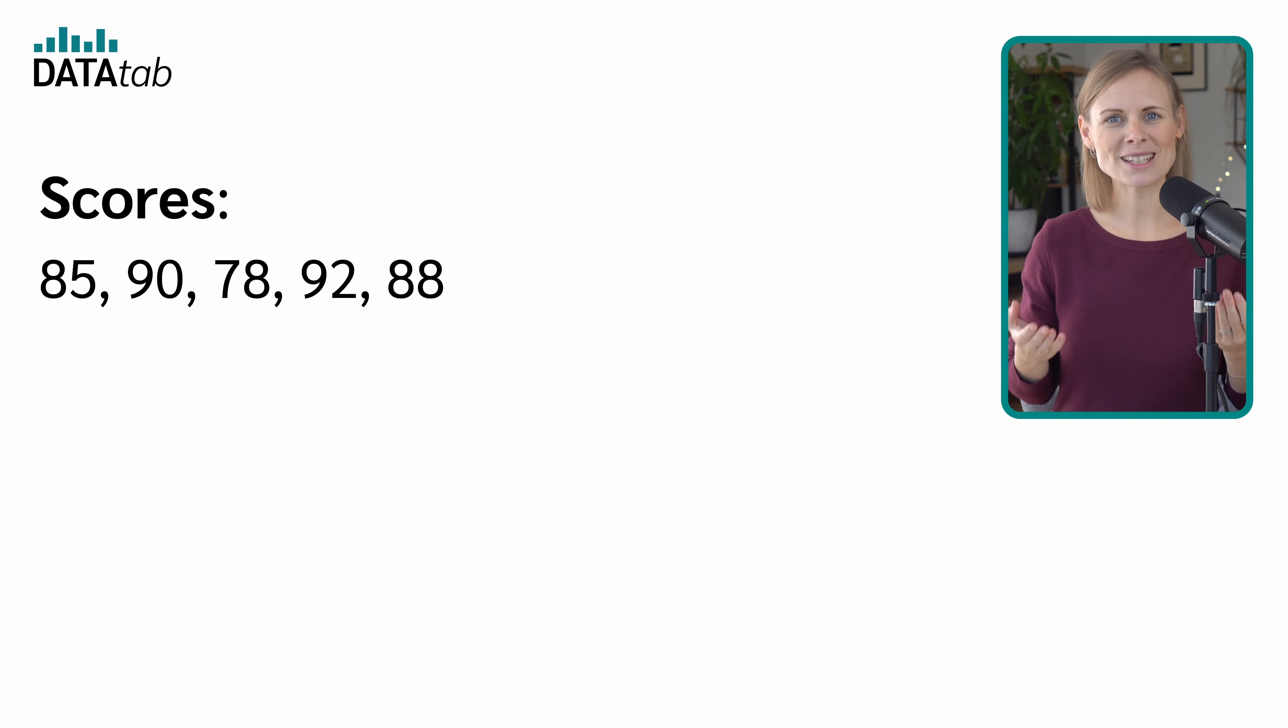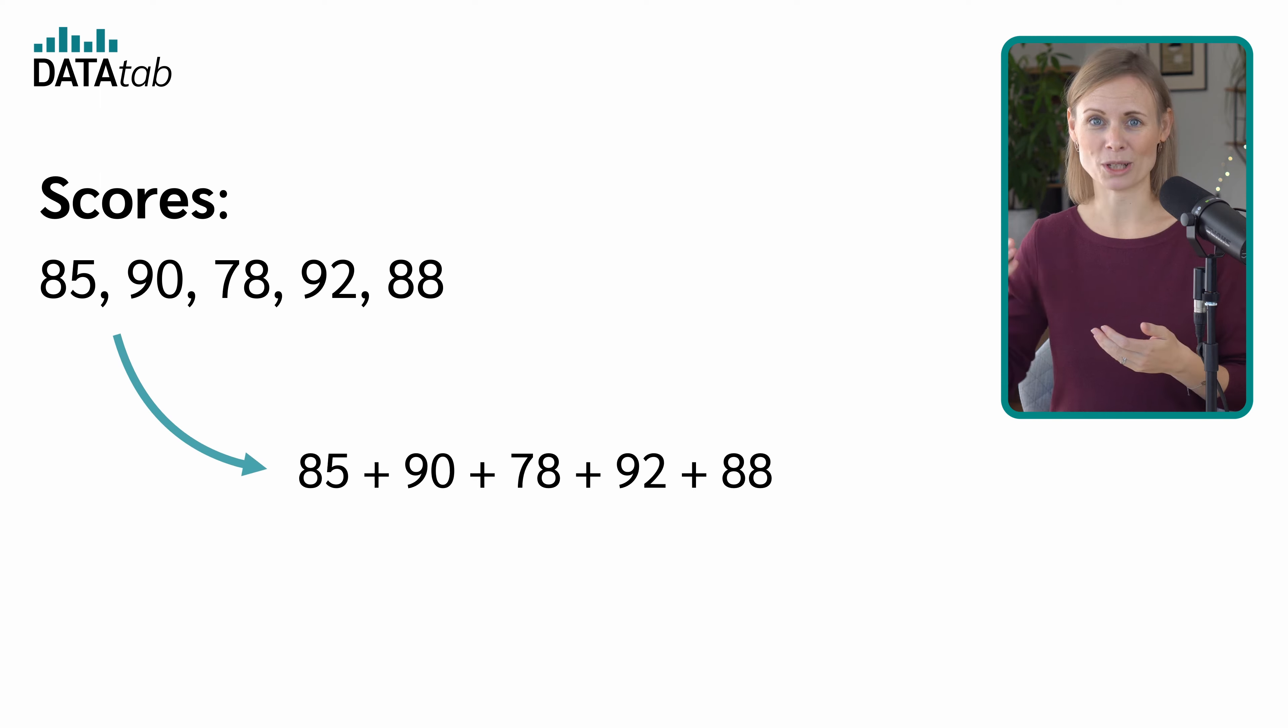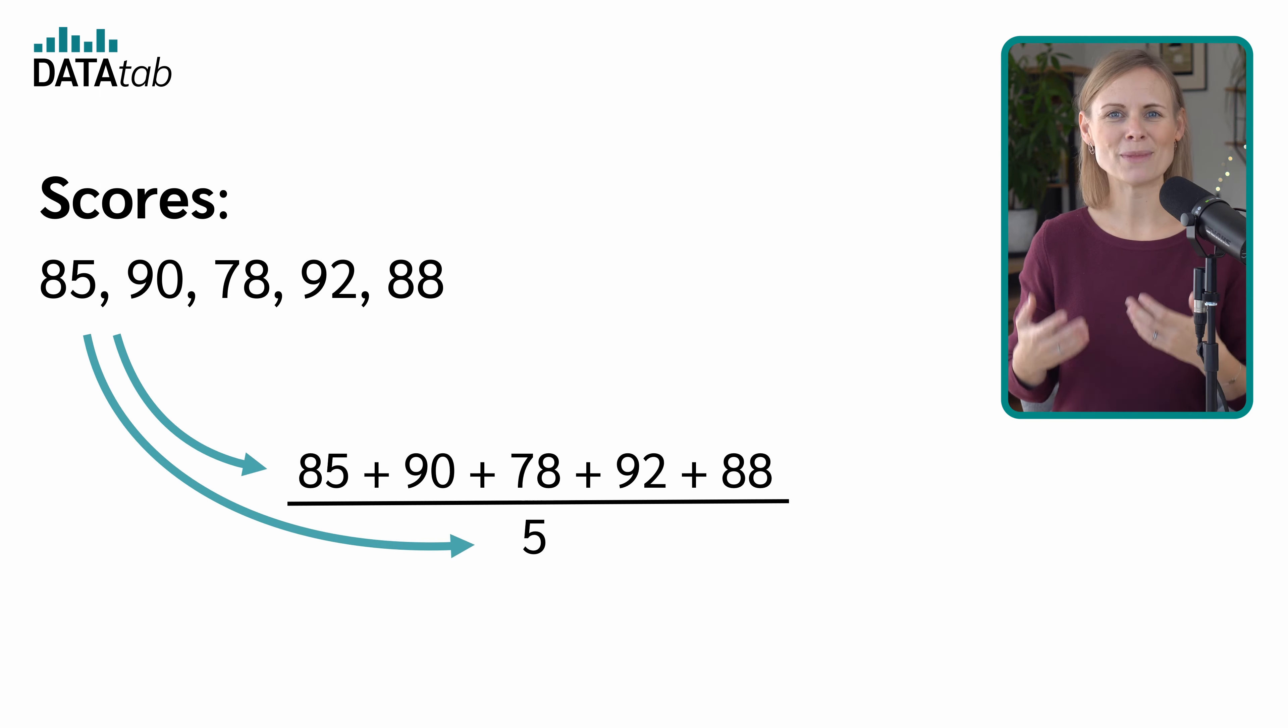Let's look at an example. Imagine we have the test scores of 5 students: 85, 90, 78, 92 and 88. To find the mean score, we add up all the scores and divide by the number of scores. So the mean test score of these 5 students is 86.6.